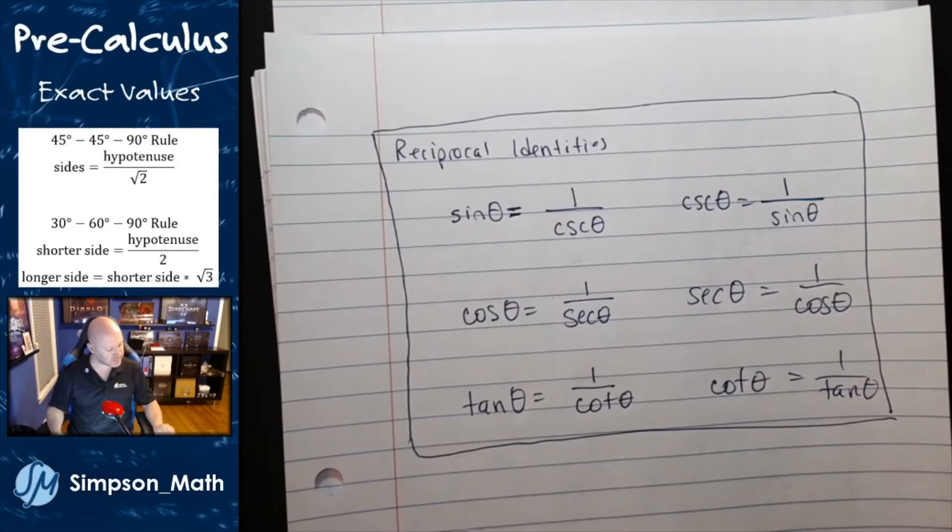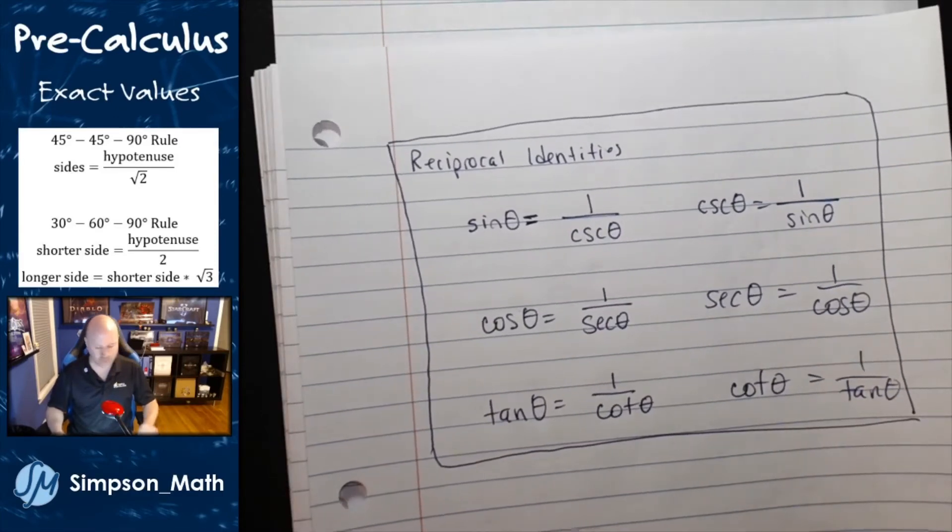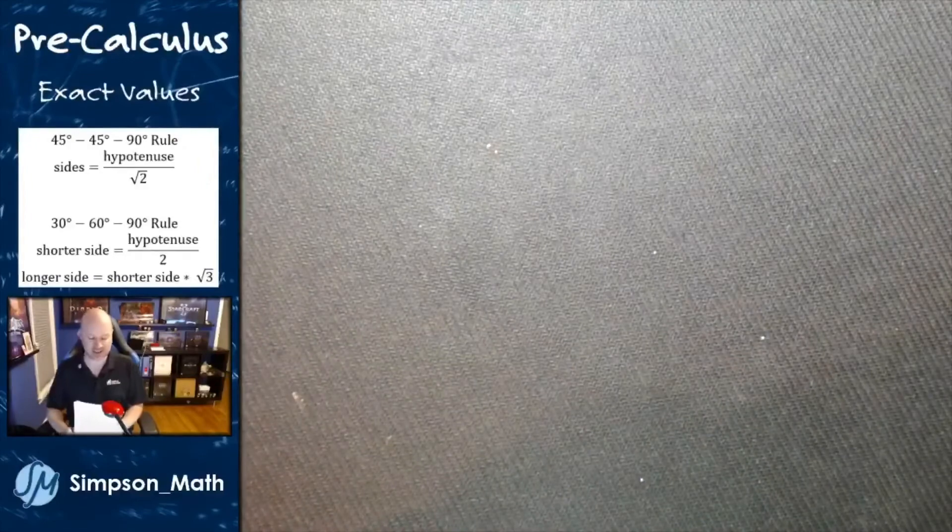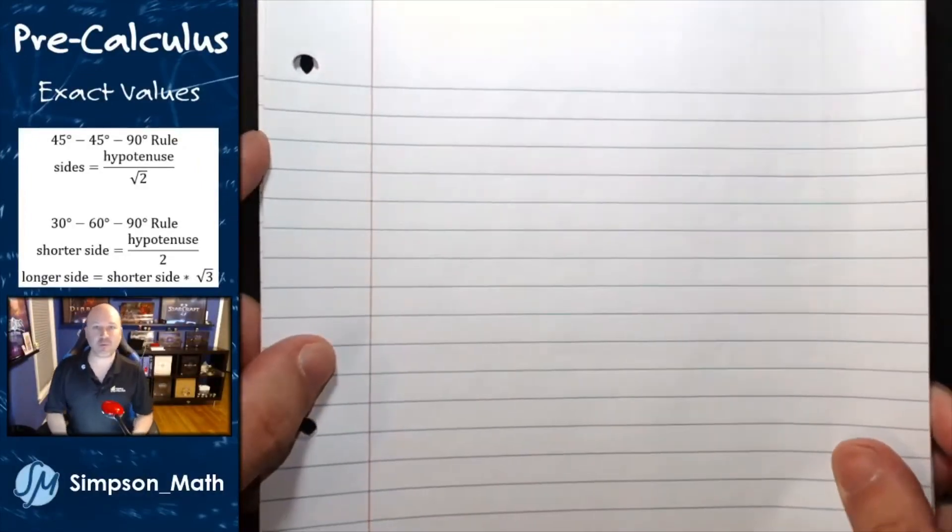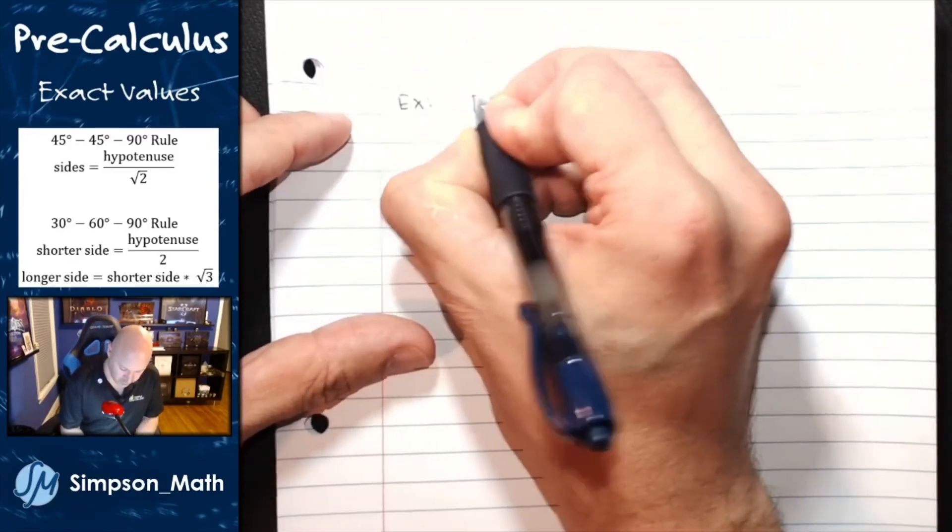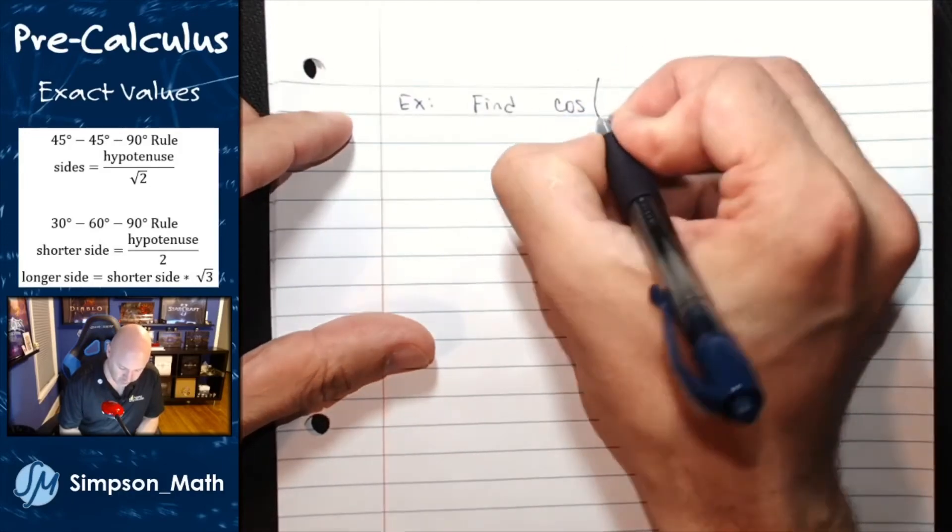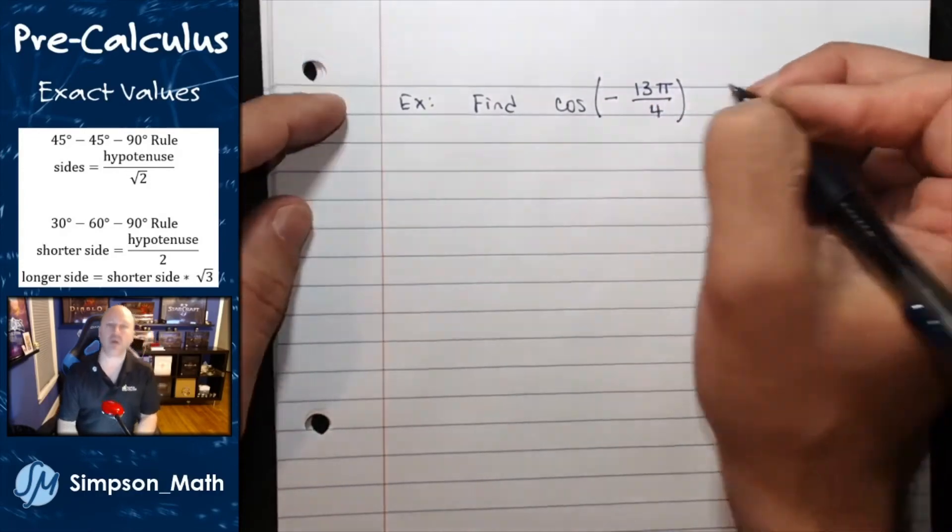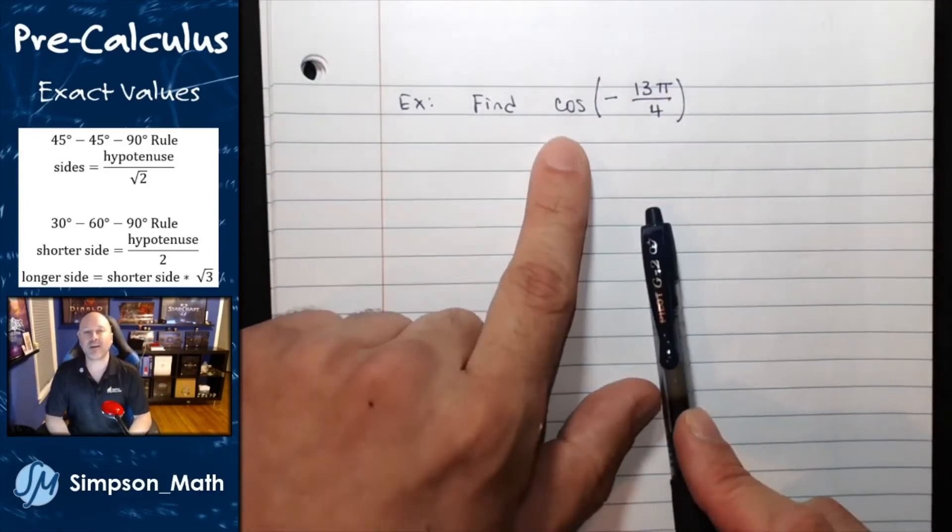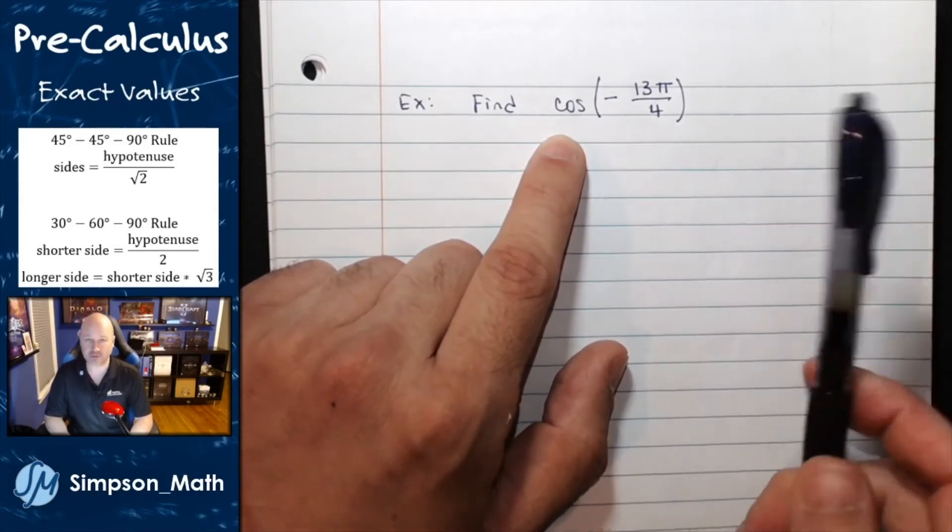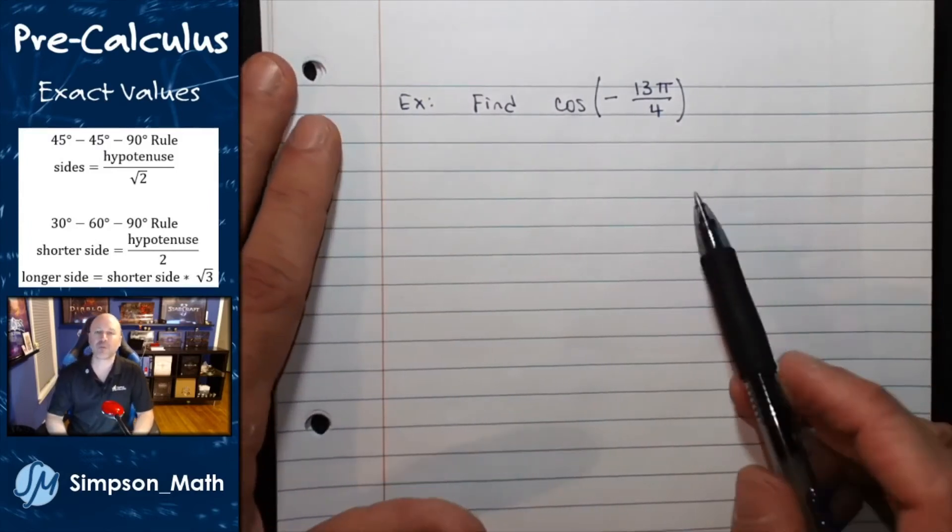I want to do one more example of fourths. So let's do that. I'm going to make the angle as nasty as I can and show you that you're prepared now for any angle I give you. Scary. Okay. I want to find the exact value of cosine of negative 13 pi fourths. Oof. Okay.